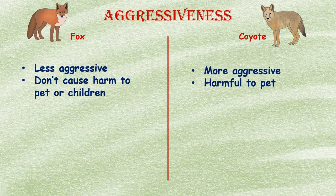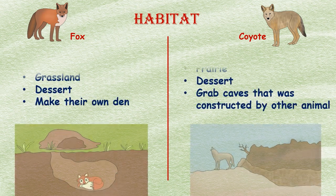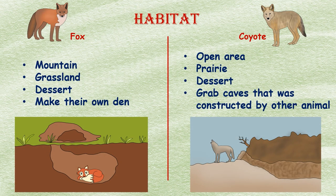A fox's nature doesn't like fighting, so it doesn't stay to fight, which is a positive thing for humans because in this way it doesn't cause harm to pets or children. Unlike foxes, coyotes benefit from human presence — they move into residential areas nearby and catch small cats and dogs to eat.